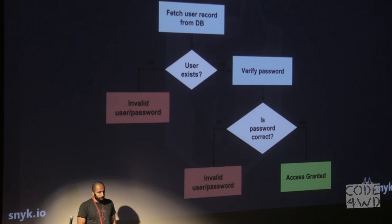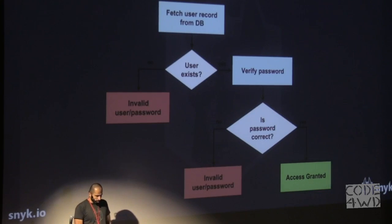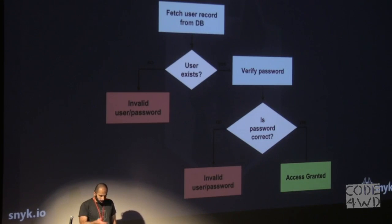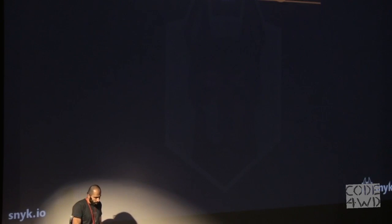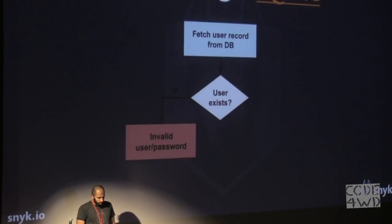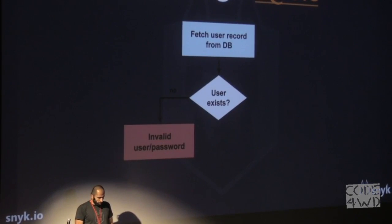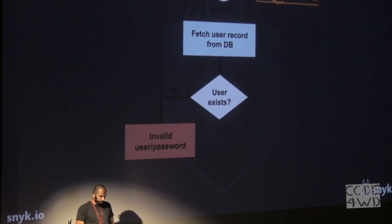We basically check whether the user exists in the database, fetch the record, and if it does, we compare the hash to the calculated hash based on the password provided by the user. If it all works we grant access, otherwise we return a login failure. So first, if we submit an email that does not exist, we go through this flow and basically immediately return a login failure.